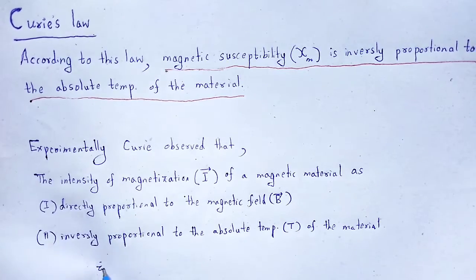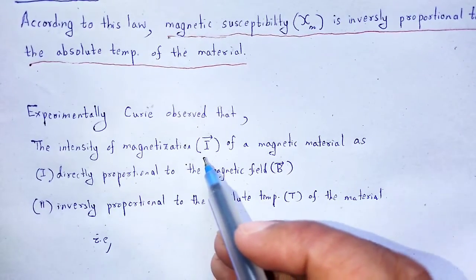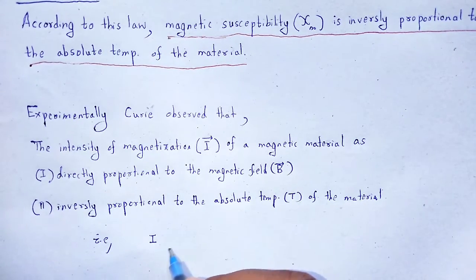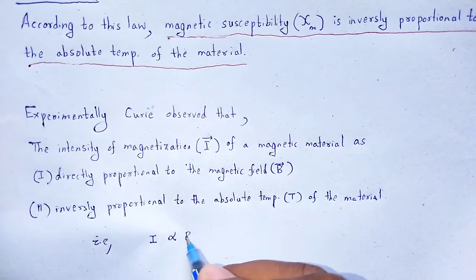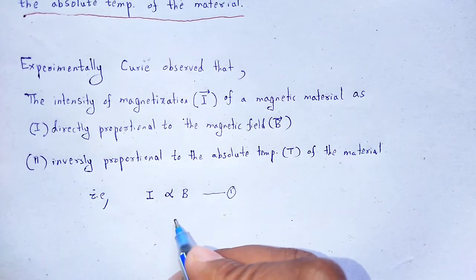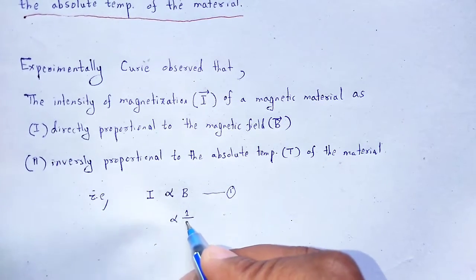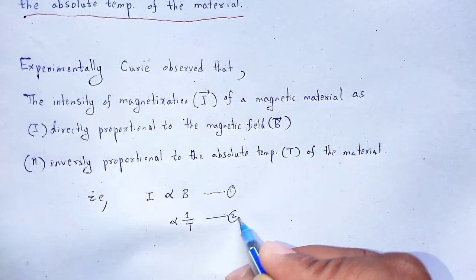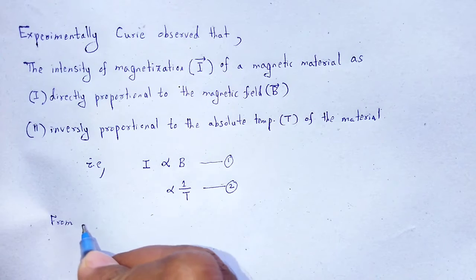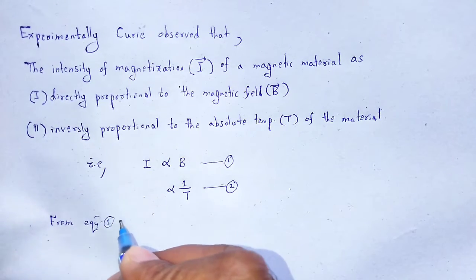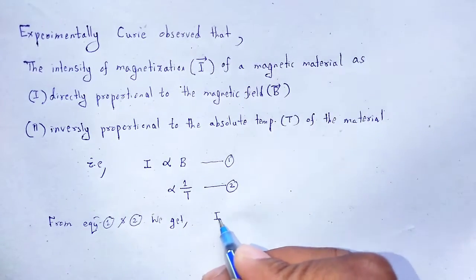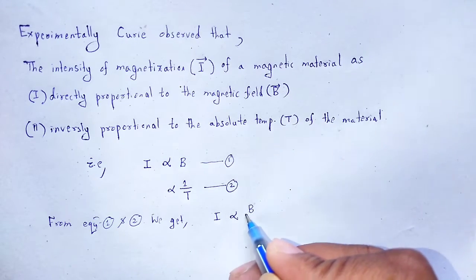Mathematically, we can say intensity of magnetization I is directly proportional to B — equation 1 — and again inversely proportional to the absolute temperature T — equation 2. Combining these two equations, we get I directly proportional to B by T.